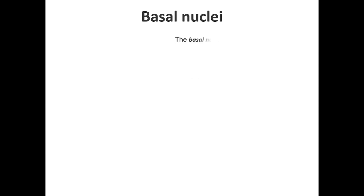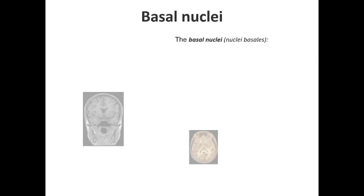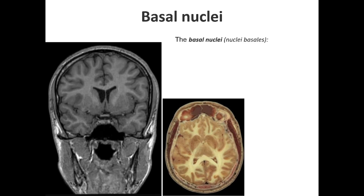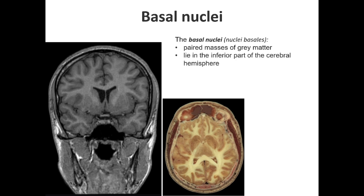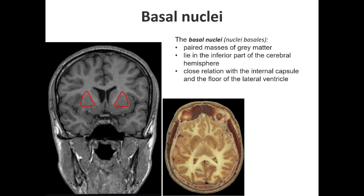The basal nuclei, nucleae basales, are paired masses of gray matter that lie in the inferior part of the cerebral hemisphere, in close relation with the internal capsule and the floor of the lateral ventricle. They are embedded within the central white matter.